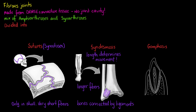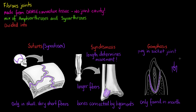Our last and most simply defined fibrous joint is a gomphosis. The gomphosis joint refers to a peg-in-socket type attachment that we will only find in the mouth, where teeth are attaching to the facial bones. This connection is made by the periodontal ligaments, and you can think of these joints as if the teeth were hammered into their sockets. I've drawn up those periodontal ligaments attaching the tooth to the facial bones here.